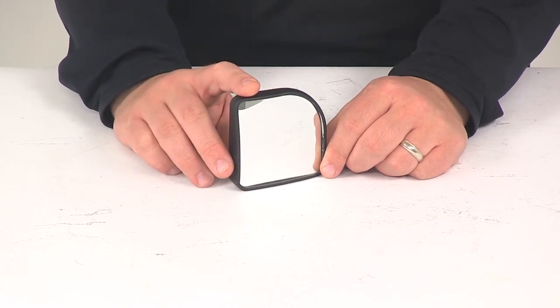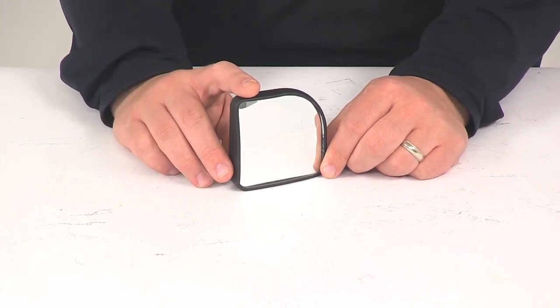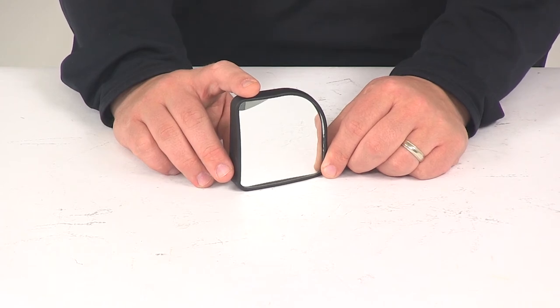Now the hotspot mirrors can be placed anywhere you wish, but they're typically placed on the bottom outside corner of the OE mirror.